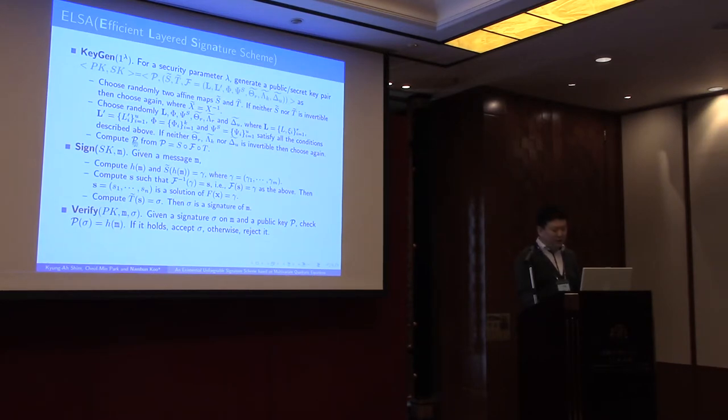Finally, compute the public key P. To generate a signature for message M, apply S tilde F inverse T tilde for hashing message H(M) in turn. To verify a signature, check this equation false or not.